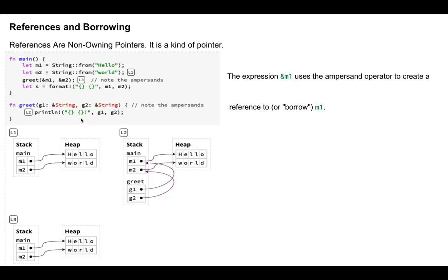So g1 and g2 neither own m1 or m2, neither do they own or point to this data in the heap. So once this function is complete and it's returned here, when it's at this point, m1 and m2 point here to hello world. But notice here in the stack, the reference to g1 and g2 is gone. That frame is gone.